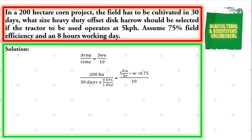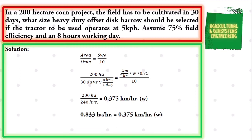Solving, we have 200 hectares over 240 hours equals 0.375 kilometers per hour times the width. This simplifies to 0.833 hectares per hour equals 0.375 kilometers per hour times the width.